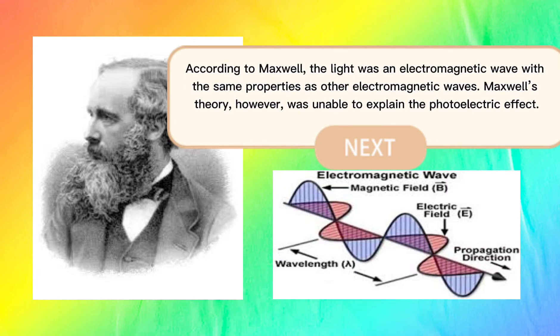According to Maxwell, the light was an electromagnetic wave with the same properties as other electromagnetic waves. Maxwell's theory, however, was unable to explain the photoelectric effect.